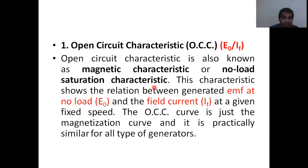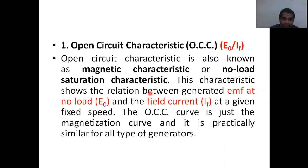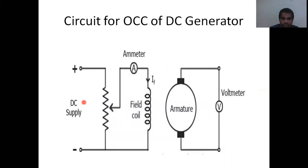We obtain the open circuit characteristics by increasing the field current gradually, and the corresponding terminal voltage is recorded from the voltmeter under no-load conditions, keeping the speed constant. For a particular speed, the field current is varied and the corresponding no-load voltage is measured across the armature terminals when no load is connected.